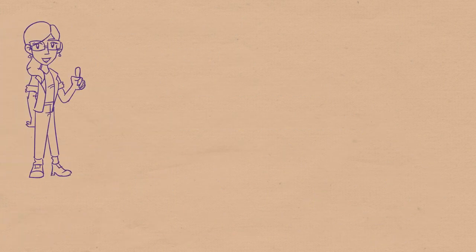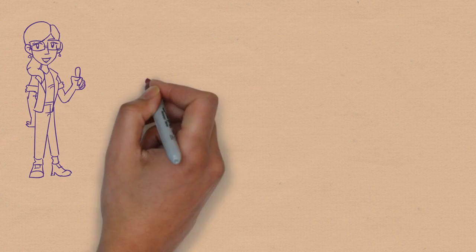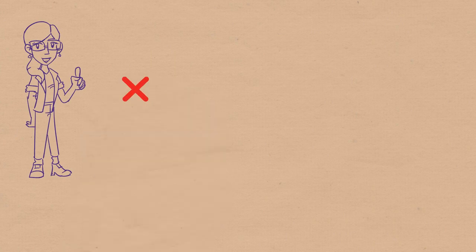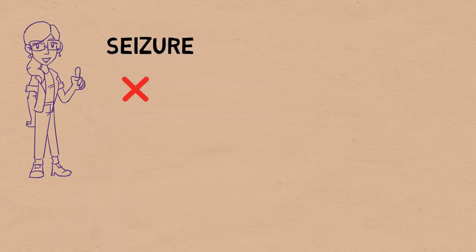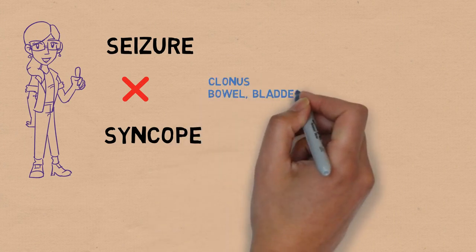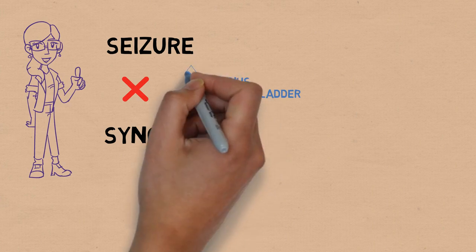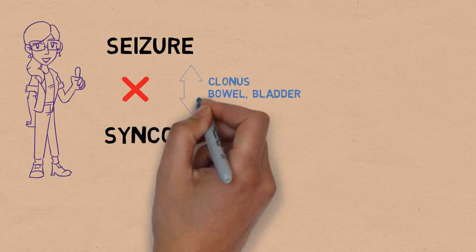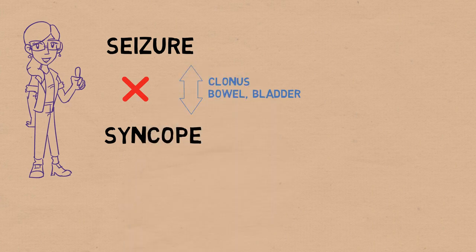Now, there's one more thing you frequently have to do in the ED, which is to be able to differentiate between someone who had a seizure and someone who had a syncope. The thing is, that in some cases syncope will also present with some clonic movements and with emptying of the bowel and bladder, so they are not really reliable indicators of a seizure, as is commonly thought.